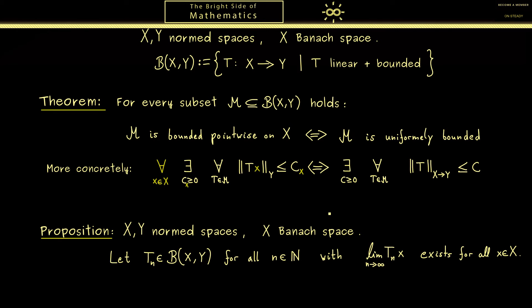Okay let's write it down. T defined as the pointwise limit, so a map from X to Y with Tx as the limit T_n x. Then the result is T is also a linear and bounded operator. Of course linear is not so surprising but bounded is because it means continuous.